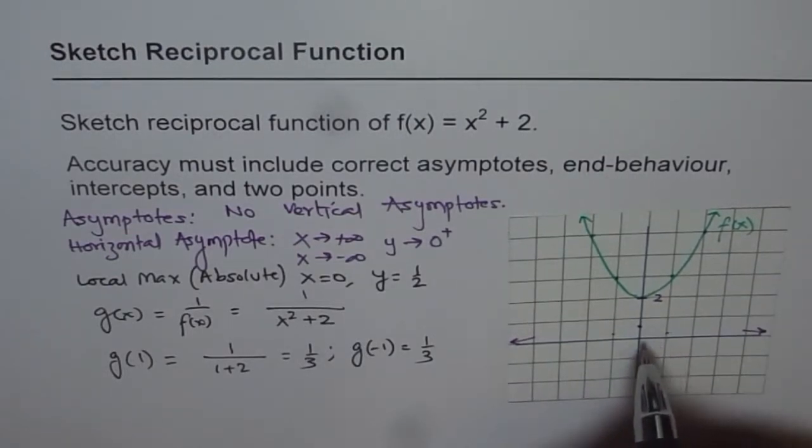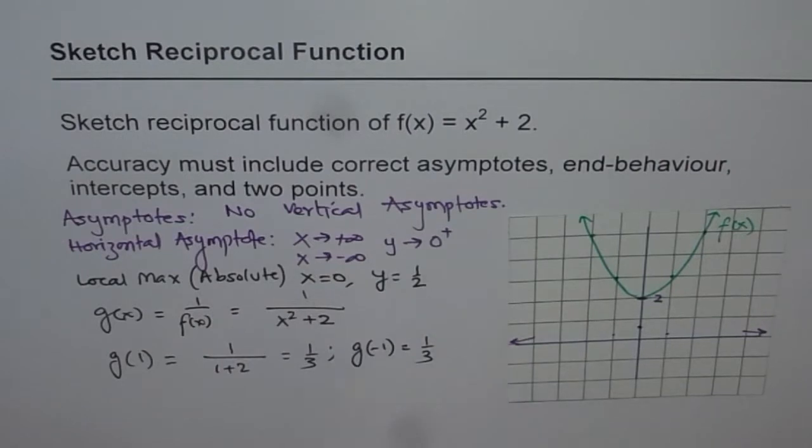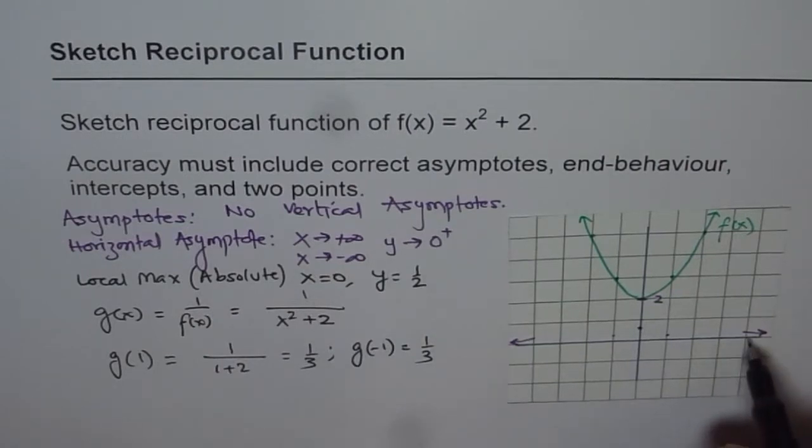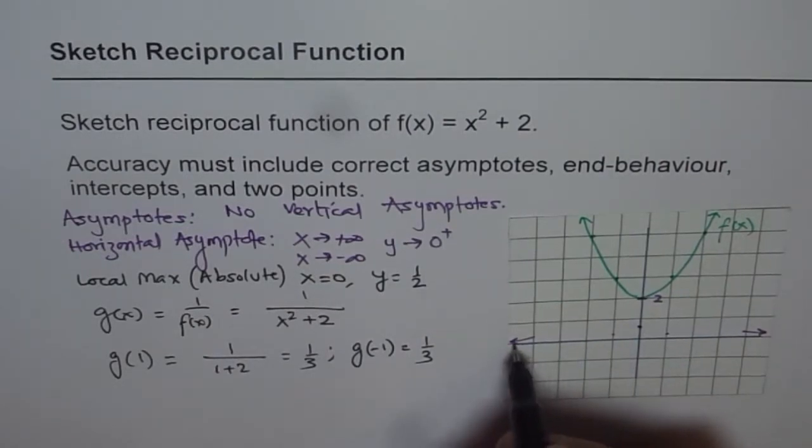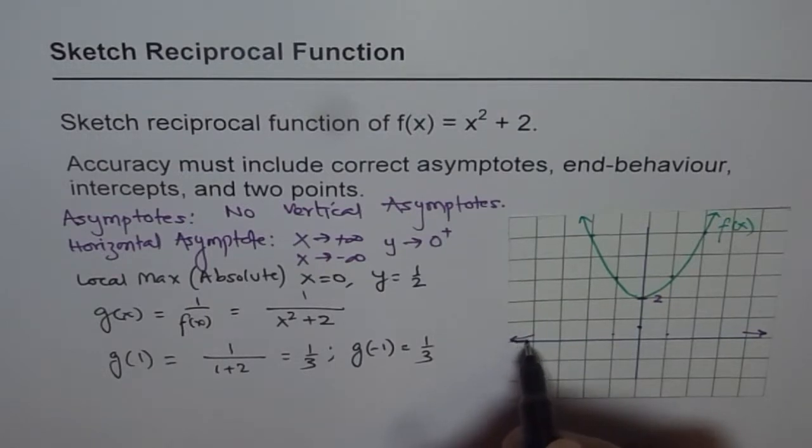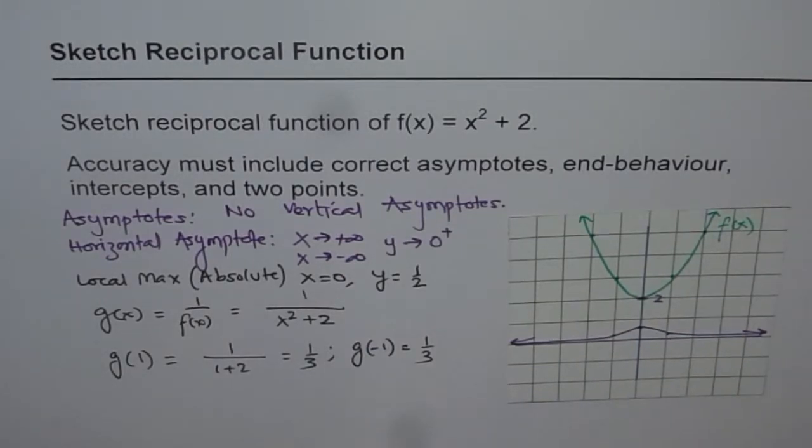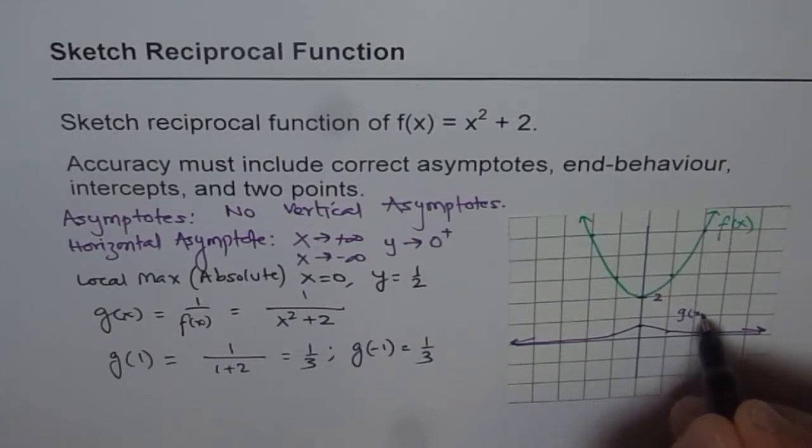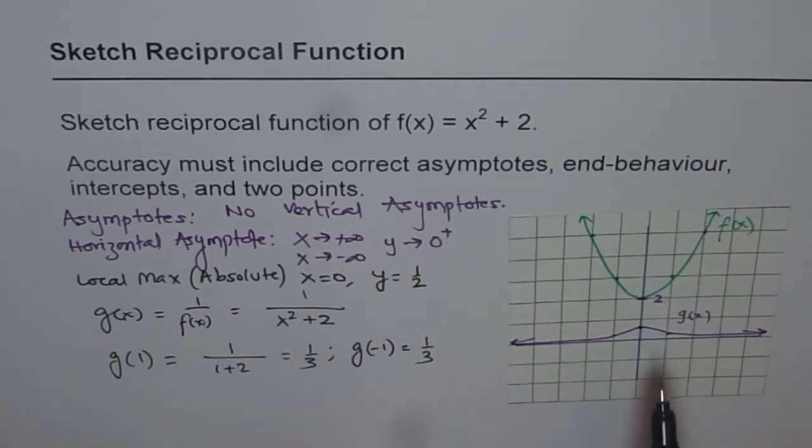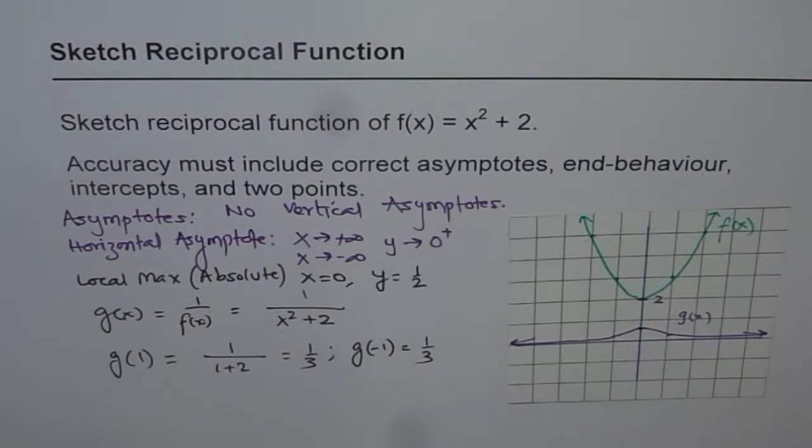And joining these points, we get our graph with the known behavior. So basically the function is very, very close to... So that becomes the function g(x), which represents the reciprocal of the given function x² + 2.